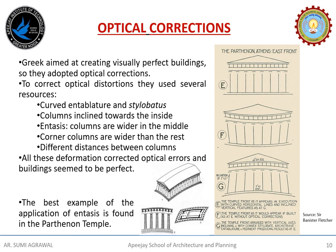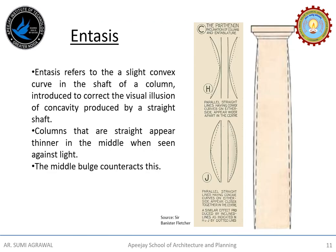The best example of the application of optical corrections is found in the Parthenon temple. The application of entasis is an expression of the desire for perfection by Greek architects. Entasis refers to the slight convex curve in the shaft of a column, introduced to correct the visual illusion of concavity produced by a straight shaft. Columns that are straight appear thinner in the middle when seen against light, making the supports appear frenzied. The middle bulge counteracts this, and the upper two-thirds of the shaft are tapered.